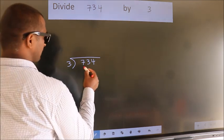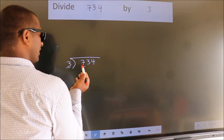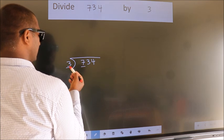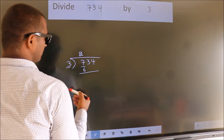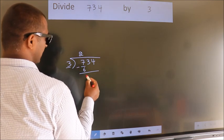Next, here we have 7, here 3. A number close to 7 in the 3 table is 3 times 2, which is 6. Now we should subtract. We get 1.